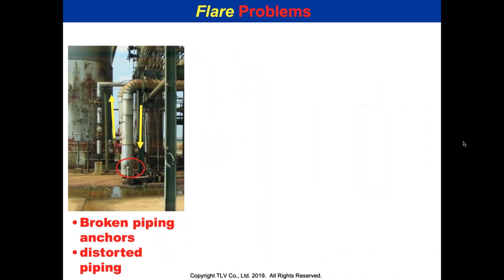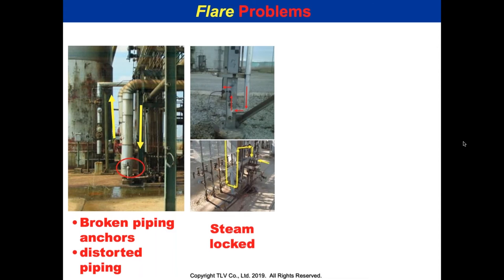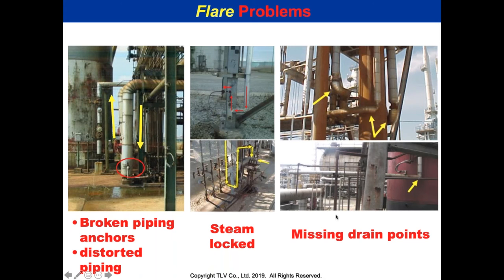When we see flare problems like broken piping anchors or distorted piping, that's caused by water hammer — it means the system isn't draining. It might be that the trap was installed wrong or improperly selected. When you have a vertical rise going up to the trap, you get a steam lock — you want the trap down low, not up high. Sometimes there are missing drain points. It's inexpensive to add a trap relative to replacing a flare tip at one and a half million dollars.